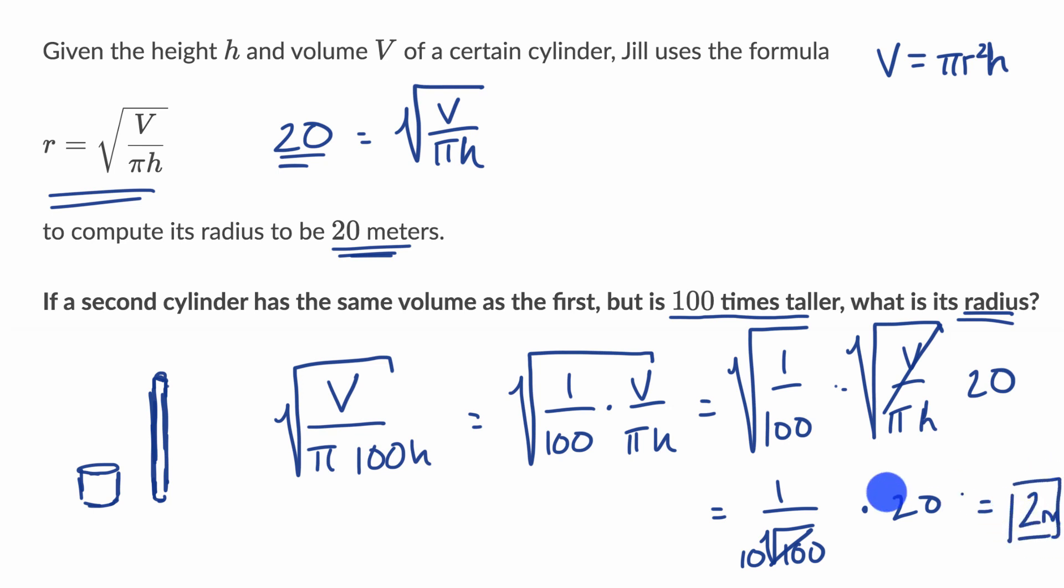The second cylinder is going to have a radius of 2 meters, which meets our intuition. If we increase our height by a factor of 100, then our radius decreases by a factor of 10. The reason why is because you square the radius. So if height increases by a factor of 100, and radius decreases by a factor of 10, it'll make this whole expression still have the same volume.